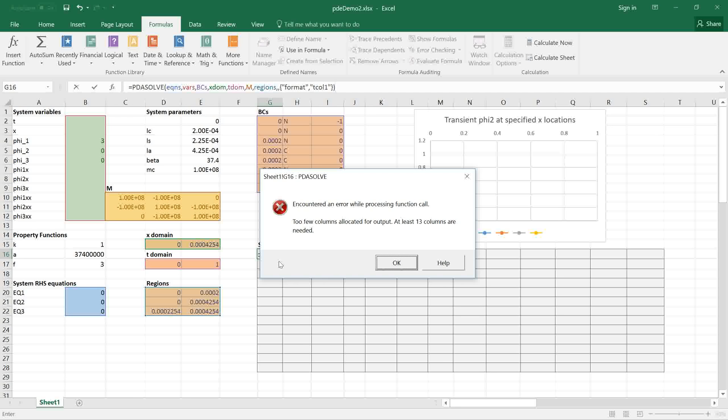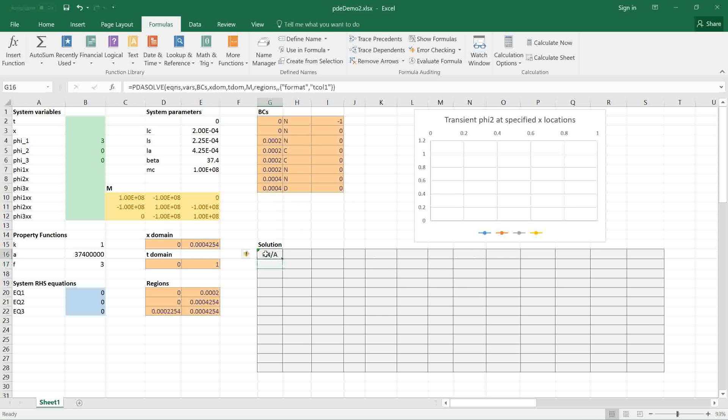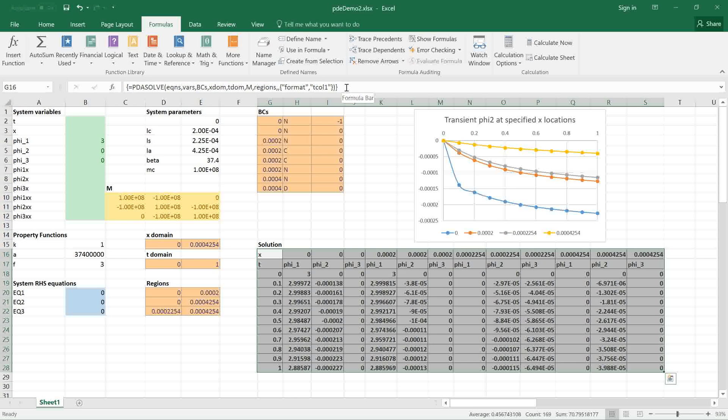I'm going to go back and allocate a larger array. I click on the cell, expand the range with 13 columns, go back and click in my formula bar and then press ctrl shift enter to run the solver as an array formula. It runs and populates the range with the solution.